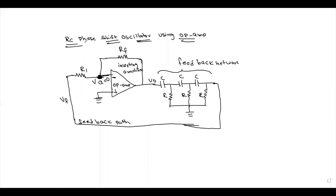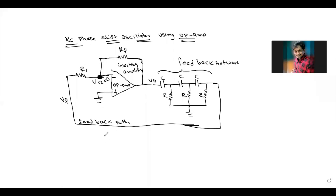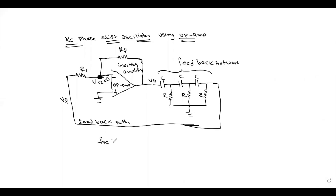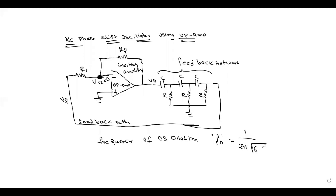The frequency of oscillation, denoted f₀, is given by the formula: f₀ = 1 / (2π√6 · RC), where R and C are the resistance and capacitance values of each RC network section.